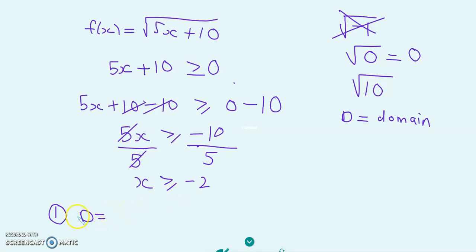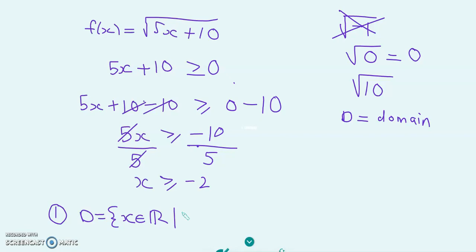Here our focus is on real numbers — numbers like 1, 2, 3, 4, 5, minus 1, minus 2, minus 3, pi, 0, 1/2, 1/3, and so on. We're not going to consider complex numbers. So the domain is the set of real numbers such that — this vertical line means 'such that' — x is bigger than or equal to minus 2. This is called set notation.